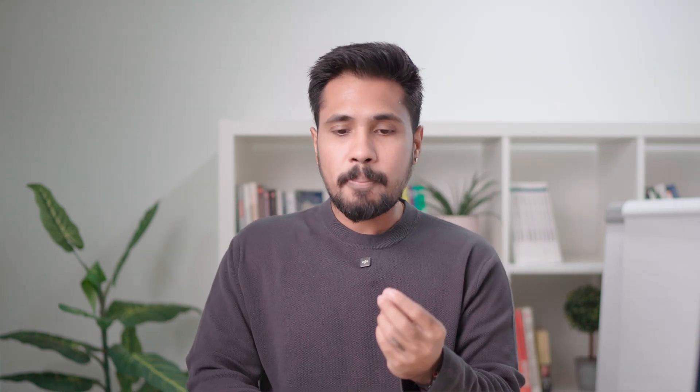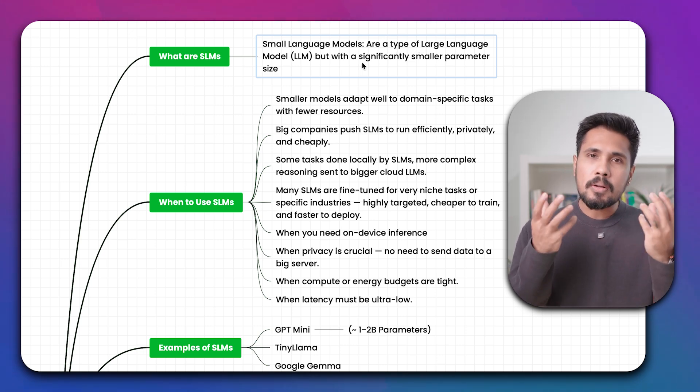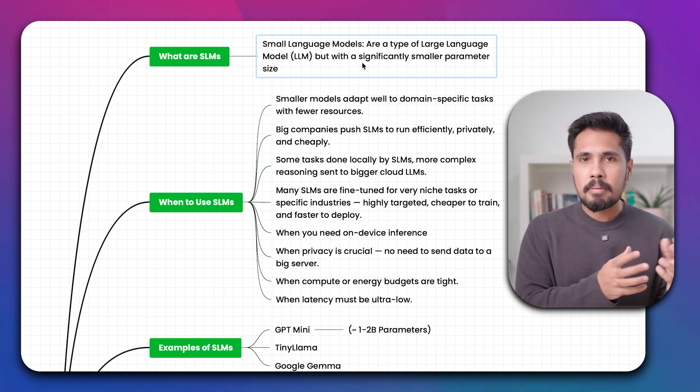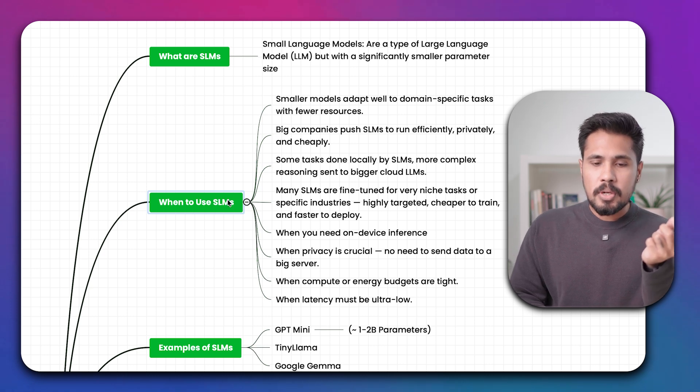So what exactly is a small language model? The size of a small language model is going to range between 1 to 2 billion parameters approximately, whereas a large language model size is going to be around 70 billion, 170 billion, or maybe around 405 billion. Very huge kind of models. Small language models are a type of large language models itself but with a significantly smaller size or smaller number of parameters.